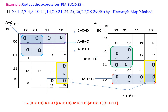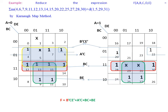In this example, we are going to reduce the expression with don't-care combinations. First, let us see the common groupings. Both green colors have common grouping, so A is eliminated and the answer is B. The second common grouping is the red color one, so A is eliminated and the answer is B C. The third common grouping is the blue color one; A is also eliminated and the answer is B-bar C E-bar. The yellow color grouping is present only in the first map, so the answer is A-bar C.